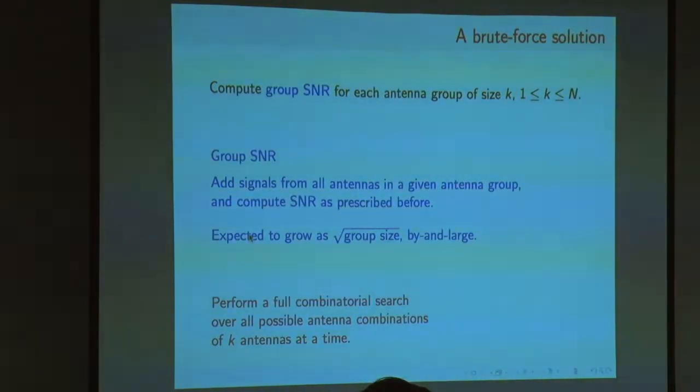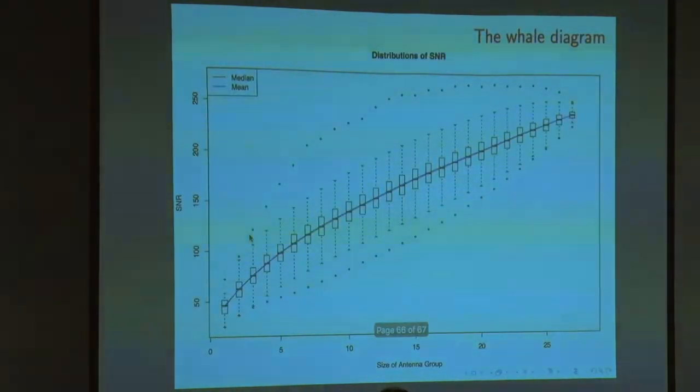Across these 30C5 combinations, you measure the signal to noise ratio. You calculate the group SNR for that. There is a way of doing it. What we expect is that this group SNR will go as square root of the group size. In this case, since we are talking about only 30 antennas, it is possible to do a full combinatorial search. Brute force, full combinatorial computing here. If you do that, this is what you see.